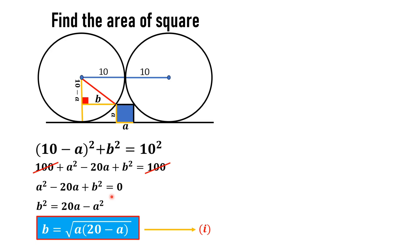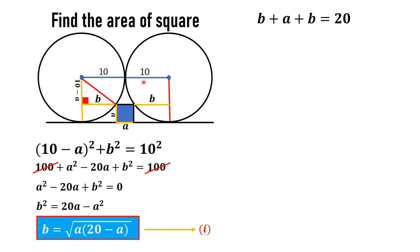Now we make further extensions to the figure. We draw another radial line equal and parallel to the previous one. We also extend the tangent line segment — the yellow segment has length equal to b. From the figure, we can see that the sum of these three lengths — b, a, and b — equals 20 units, because this total line is 10 plus 10. So we can write: b plus a plus b equals 20, which gives 2b plus a equals 20.